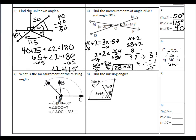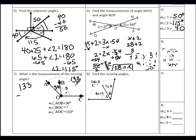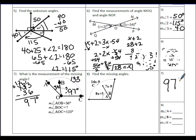To find the measurement of angle BOC: angle AOB is 36 degrees and angle AOC is 133 degrees. The whole angle AOC is made up of the two smaller angles, so 133 minus 36 equals 97 degrees for angle BOC. That makes sense because it looks slightly larger than a 90-degree angle.